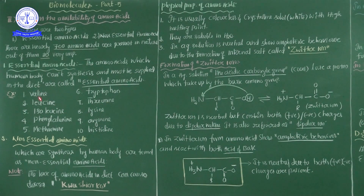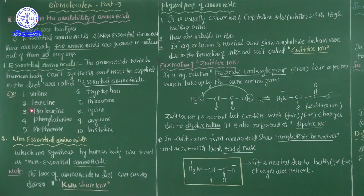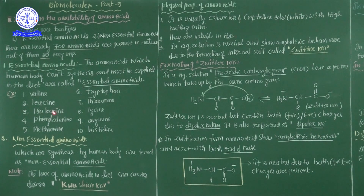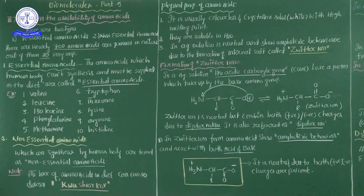There are 10 major important essential amino acids obtained from dietary food. These are: Valine, Leucine, Isoleucine, Phenylalanine, Methionine, Tryptophan, Threonine, Lysine, Arginine, and Histidine. All their structures are present in your CBSE textbook.